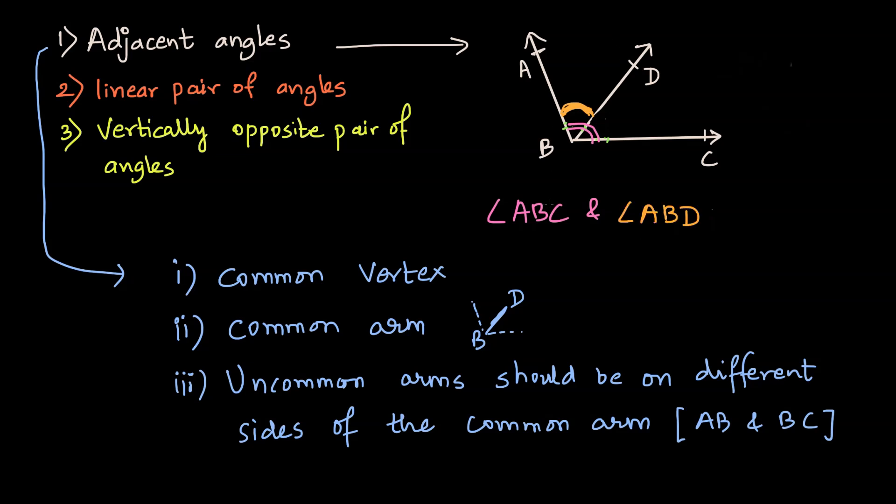Now let's see if angle ABC and angle ABD are adjacent angles. So let's use the check mark for all these three points. Do these angles have a common vertex? Yes, they do. We see B here. So the first point is satisfied.